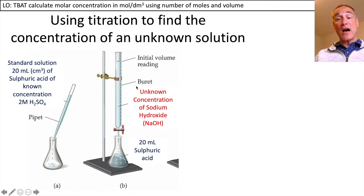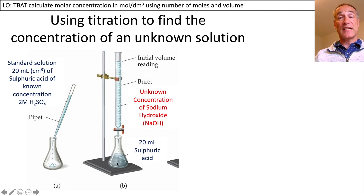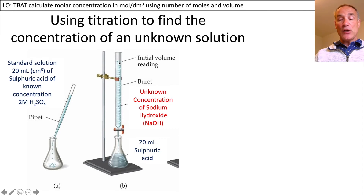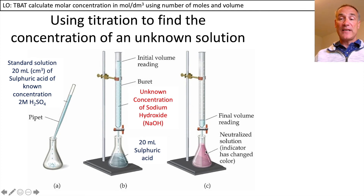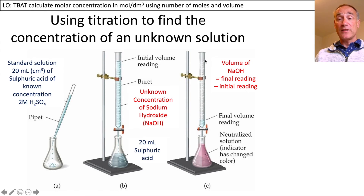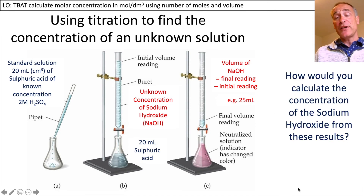We're going to put exactly 20 centimetres cubed of the sulphuric acid into a flask using a graduated pipette. We then add an unknown concentration of sodium hydroxide alkali using a burette. We measure the initial volume reading on the burette scale, then add sodium hydroxide until an indicator shows neutralisation, or we use a pH probe. The final volume minus the initial volume gives the volume of sodium hydroxide used — in this case 25 centimetres cubed.